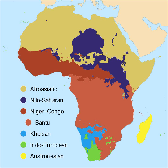Nilo-Saharan languages are spoken from Tanzania to Sudan and from Chad to Mali. There are several other small families and language isolates, as well as languages that have yet to be classified. In addition, Africa has a wide variety of sign languages, many of which are language isolates.